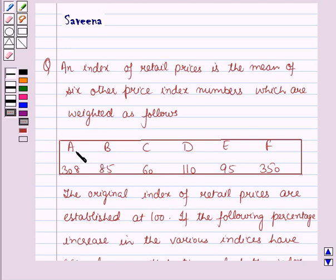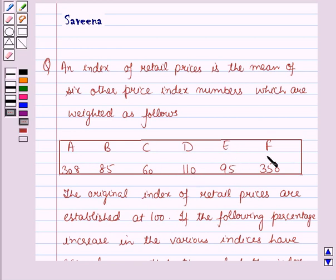The weight for A is given as 308, for B it is given 85, and the weight for C is 60. The weight for D is 110, the weight for E is 95, and the weight for F is 350.